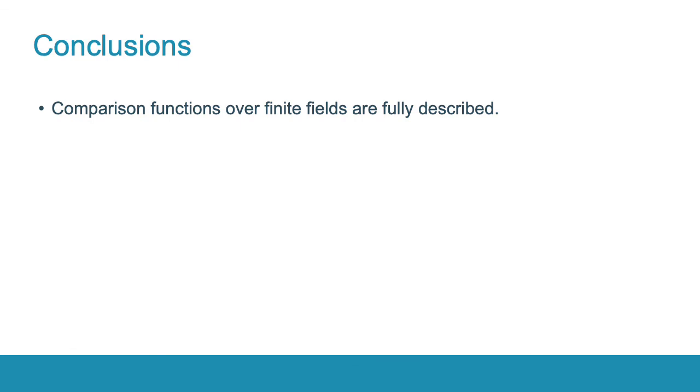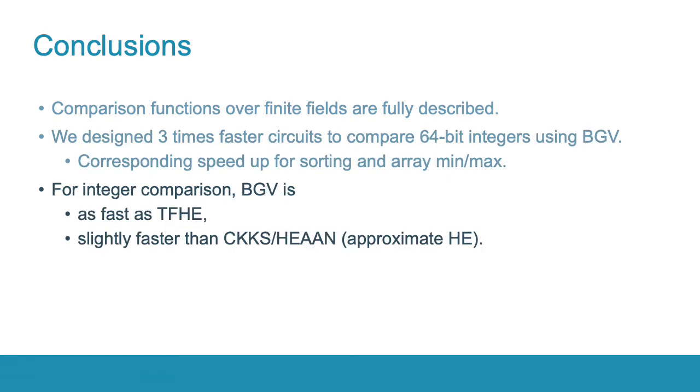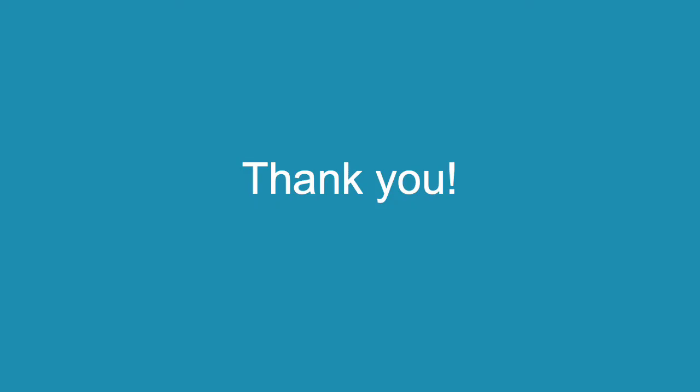To conclude, I sum up the main contributions of this work. First, we fully describe the comparison functions over finite fields. Then, as a result, we designed faster circuits for these functions that allowed us to improve the running time by a factor 3. The corresponding speedup is shown in two applications: sorting and array minimum-maximum. Finally, our circuits show that the BGV scheme is also suitable for integer comparison and can be as fast as TFHE and even better than the CKKS scheme. Our future work will be focused on looking for other useful functions over rings and fields with efficient homomorphic circuits. Thank you very much and please ask questions.